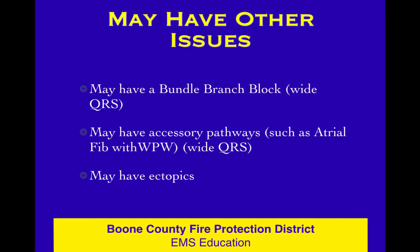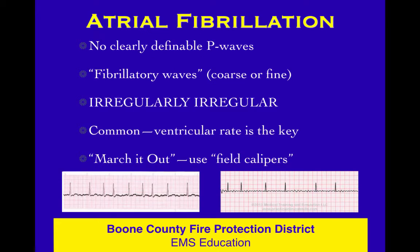An atrial rhythm can have a bundle branch block, so these may be wide or not wide. It could have an accessory pathway making it wide or not. There may be ectopic beats in there, like one of these atrial rhythms with a PVC. Lots of variations. Atrial fib — there are no clearly definable P waves; those are called fibrillatory waves or fib waves. They may be coarse or fine, obvious or not, but it's going to be irregularly irregular — no pattern.